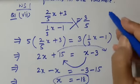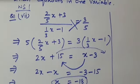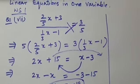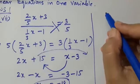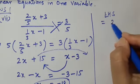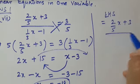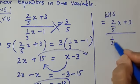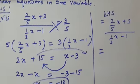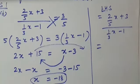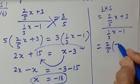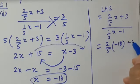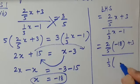Now we need to verify this. For verification, we substitute x equals minus 18 in the left hand side. The left hand side is 2 upon 5x plus 3, divided by 1 upon 3x minus 1. Substituting x equals minus 18: we get 2 upon 5 into minus 18 plus 3, divided by 1 upon 3 into minus 18 minus 1.